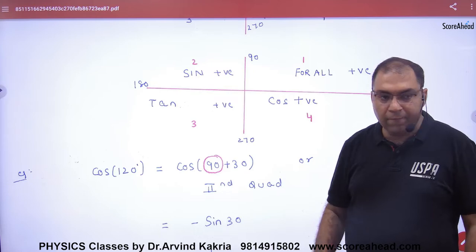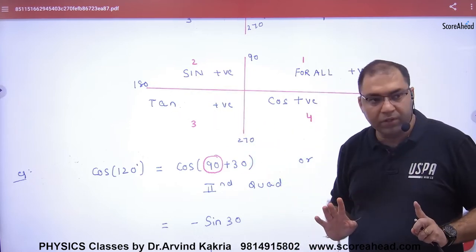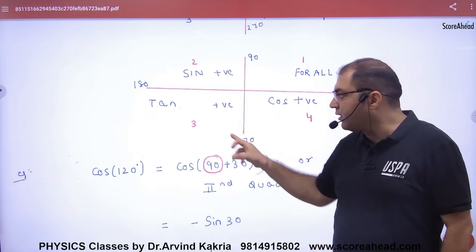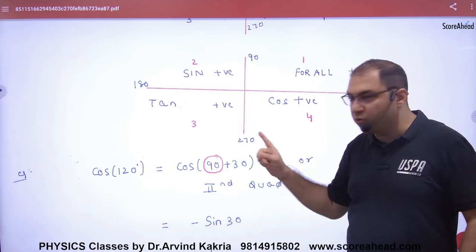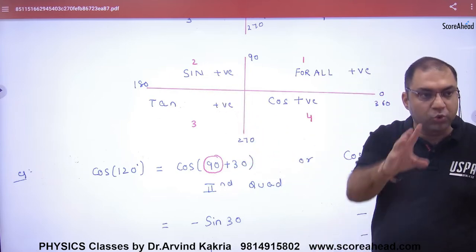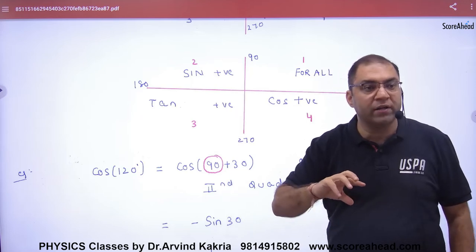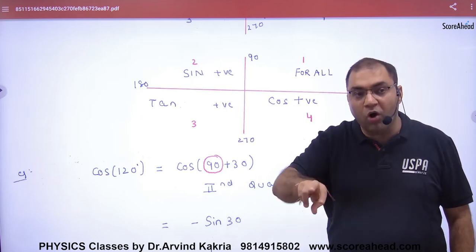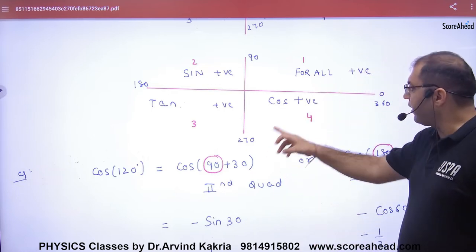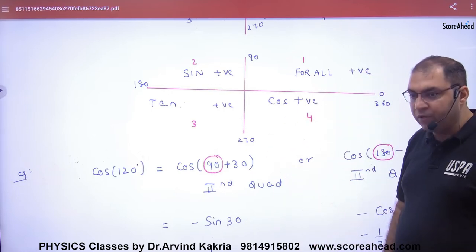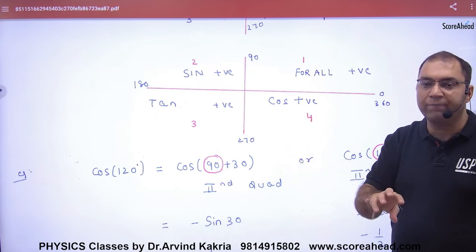If you have some angle between 180 and 270 — for example, 210 degrees — that is a third quadrant angle. What is tan(210)? Positive. But cos and sin will be negative. And if you have some angle between 270 and 360, then cos will be positive, while sin and tan will be negative.